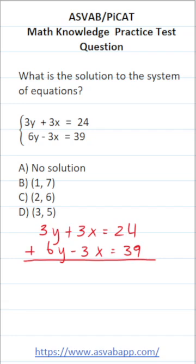3y plus 6y is 9y. 3x plus negative 3x, this is eliminated, equals 24 plus 39 is 63. To solve for y, we just divide both sides of this equation by 9. In doing so, this crosses out. 63 divided by 9 is 7.